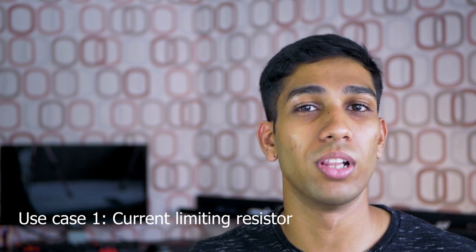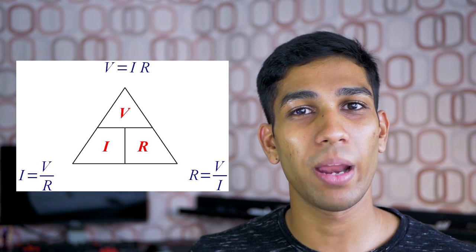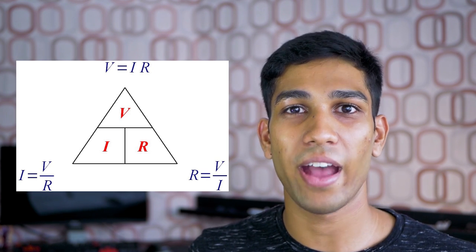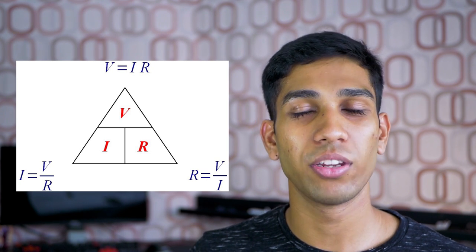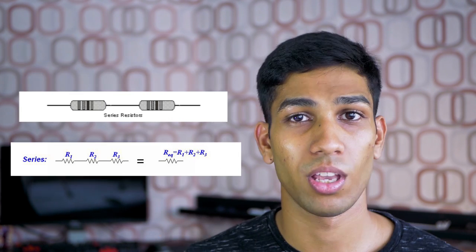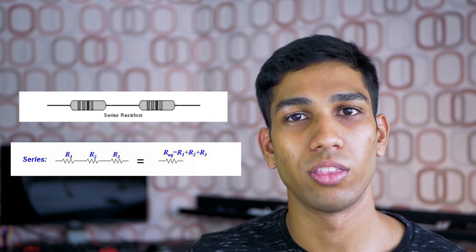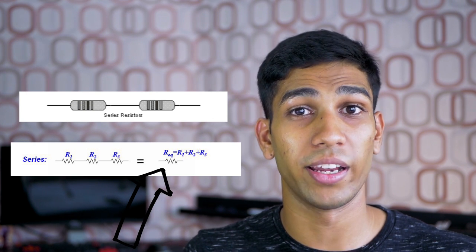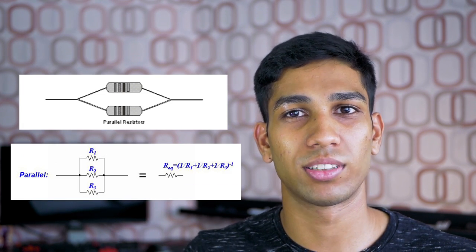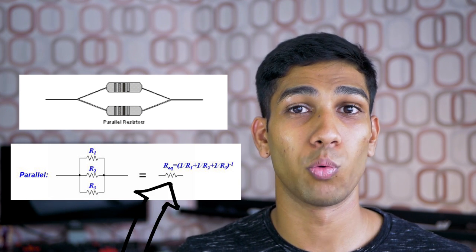Now let's talk about some of the use cases of resistors. The first use case is to limit current. Using Ohm's law, we can input our voltage and the desired current, then determine the resistor value we should be using. If we wire a resistor in series to our circuit, the overall resistance increases; if we wire it in parallel, the overall resistance will decrease.